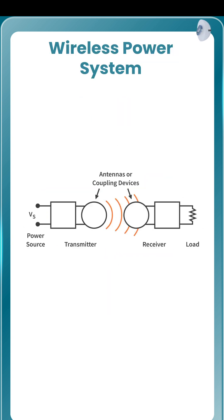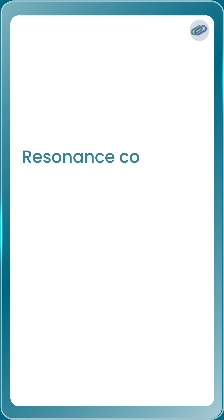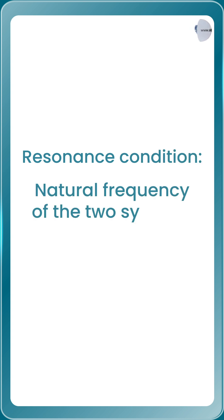In order to transmit power wirelessly, a source and a receiver are required. The source and the receiver must be in resonance condition. That is, the natural frequencies of the two systems must match.